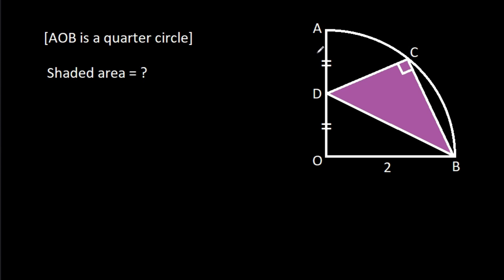In this video, we have been given that AOB is a quarter circle, and AD is equal to OD, and OB is 2. Angle BCD is 90 degrees. We have to find the shaded area.